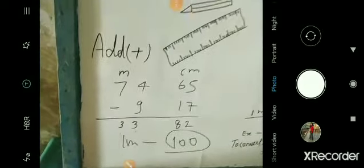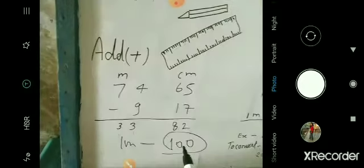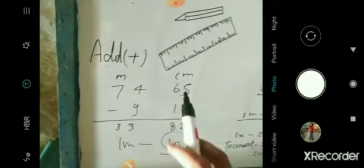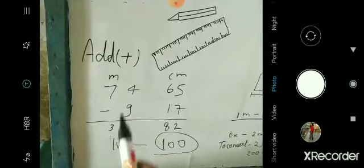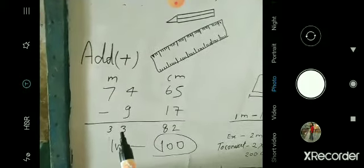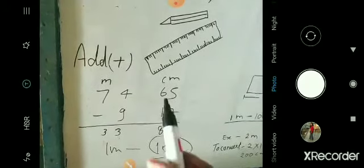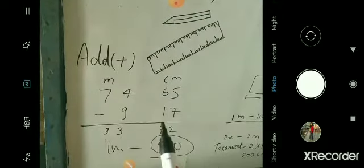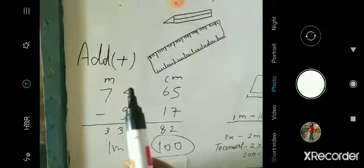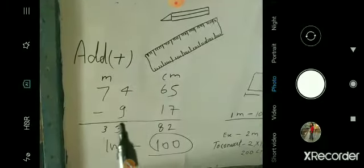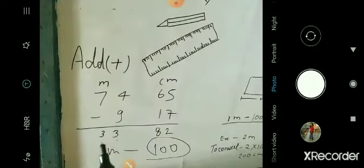When we add numbers with meters and centimeters, we add the centimeter parts together and the meter parts together. For example: 5 plus 7 equals 12, carry the 1. Then 6 plus 1 plus the carry equals 8. And 4 plus 9 equals 13, carry the 1. Finally 7 plus 1 equals 8.